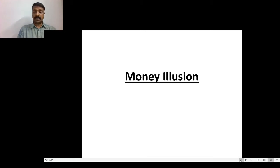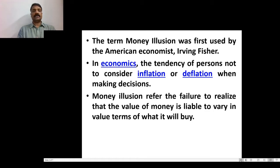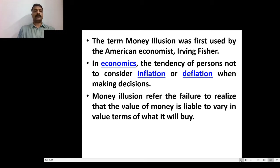It's a new topic: money illusion. Money illusion is a term used in economics, coined by Irving Fischer. Now we are going to talk about money illusion. Money income increased from 80,000 to 1 lakh rupees — that is, 80,000 to 1 lakh rupees change is possible.